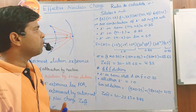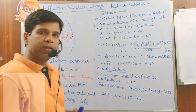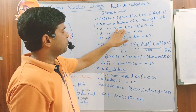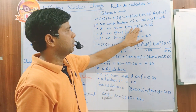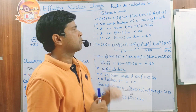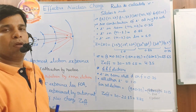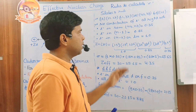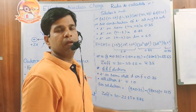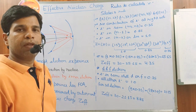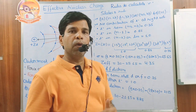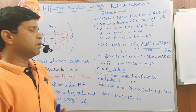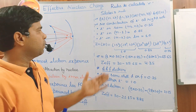To calculate Sigma for an ns or np electron: electrons present in the same ns or np group contribute 0.35 each; electrons in the (n-1) shell contribute 0.85 each; and electrons in the (n-2) shell or lower contribute 1.00 each.